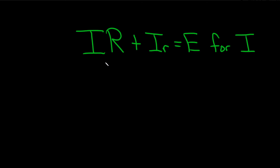In this problem, we have an equation with multiple variables, and we have to solve for big I. We have I times big R plus I times little r equals E. The nice thing about this problem is all of the big I's are already on the left-hand side, so all we have to do to start the problem is just factor out the big I.